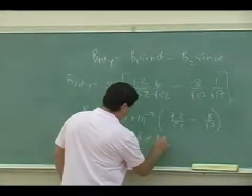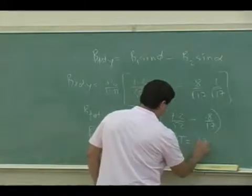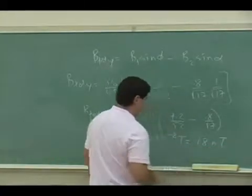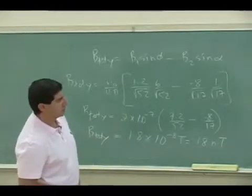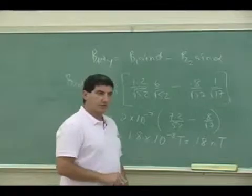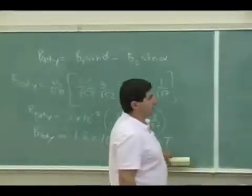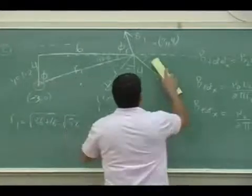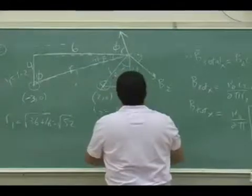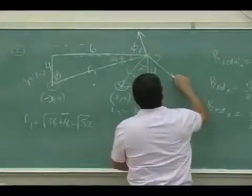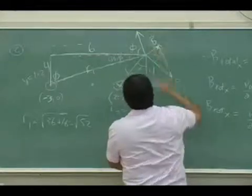In terms of a vector picture, here's what's happening. When you're adding these two, the sum is kind of coming out like this. When you put this to the tip of that, the total magnetic field is coming out like that.